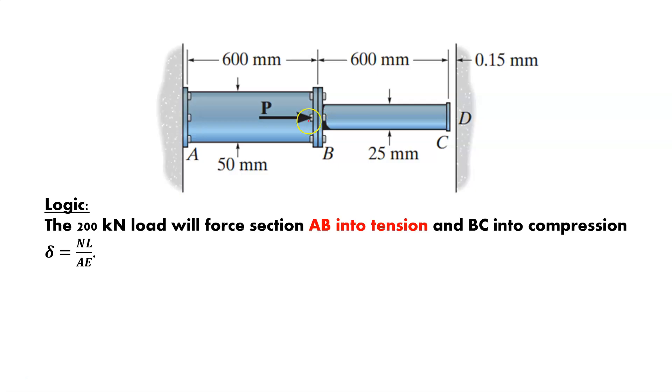We've got a 200 kilonewton load, and it's going to force section AB into tension. It's going to pull in one direction, going to have an equal and opposite reaction in the other. And BC will be in a state of compression as it forces it into the wall. So we get a reaction going in that direction there. So we know that's going to happen for sure.